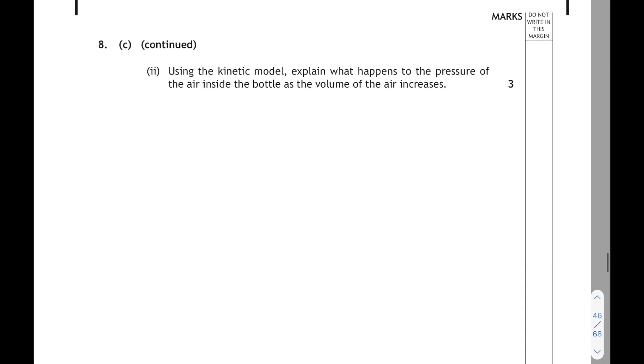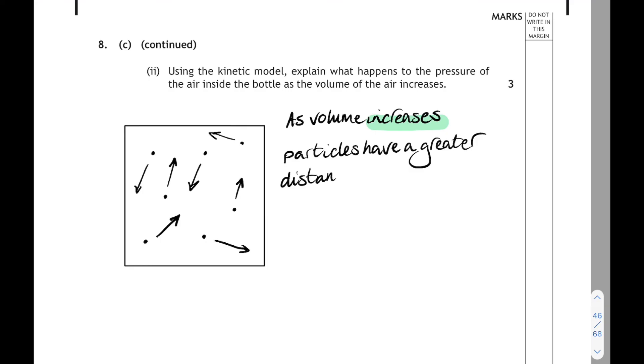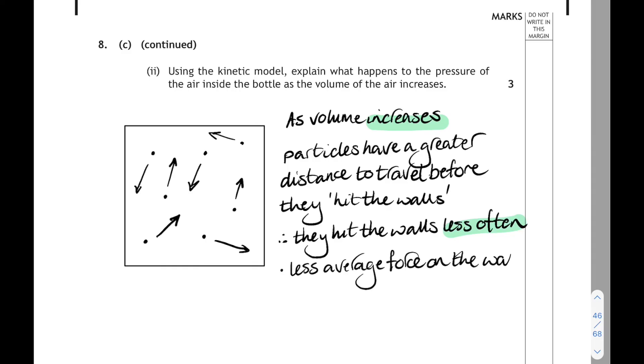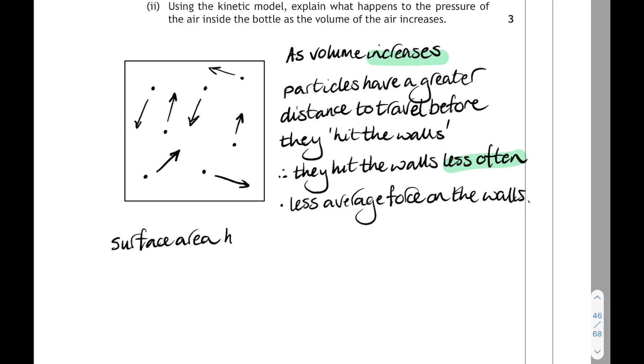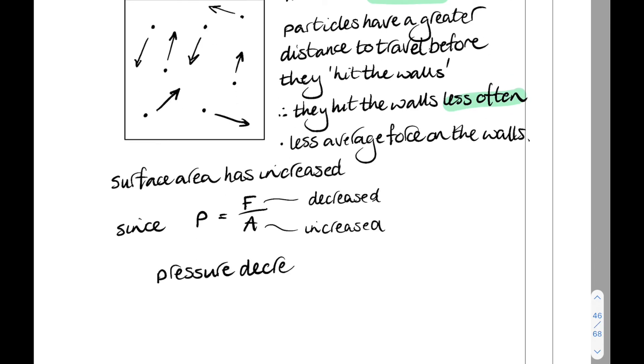Question 8C. Using the kinetic model, explain what happens to the pressure of the air inside the bottle as the volume increases. I always draw a diagram when it's a kinetic model question. Let's draw the particles in a box. They're all moving about at random. Now if the volume was to increase, then the particles will have a greater distance to travel before they will hit the walls of the container again. So they're going to hit the walls less often. That means there's going to be less average force on the walls of the container. The surface area of the container will increase as well. And so if we look at the relationship P equals F over A, if the average force goes down and the surface area has increased, then the net effect of both of them is that your pressure will decrease as the volume increases.